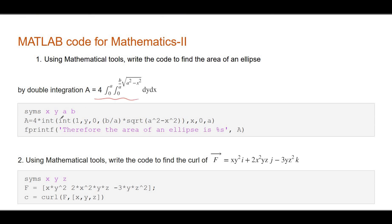In this video I have taken question number one. We need to integrate this twice, so we write int of int. There is no function of x and y here — the integrand is one, so I have put one. With respect to y I have written y. All commas and brackets are important in the code — don't miss anything. The limit is zero to b/a, and we have b/a times square root of (a² - x²). Then integrate with respect to x, limit zero to a. This carries six marks.